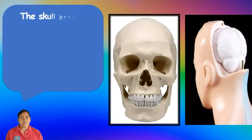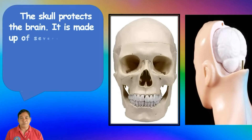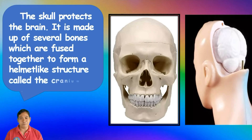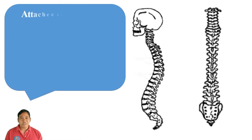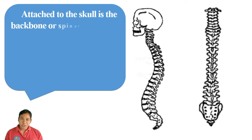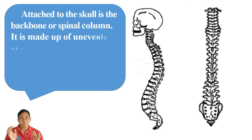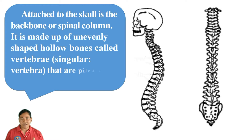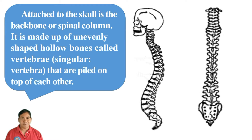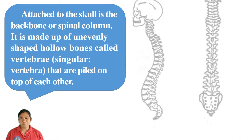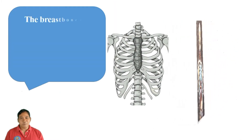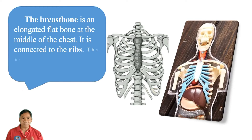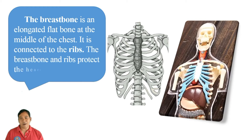The skull protects the brain. It is made up of several bones which are fused together to form a helmet-like structure called the cranium. Attached to the skull is the backbone, or spinal column. It is made up of evenly shaped hollow bones called vertebrae that are piled on top of each other. The breastbone is an elongated flat bone at the middle of the chest, connected to the ribs. The breastbone and ribs protect the heart and lungs.